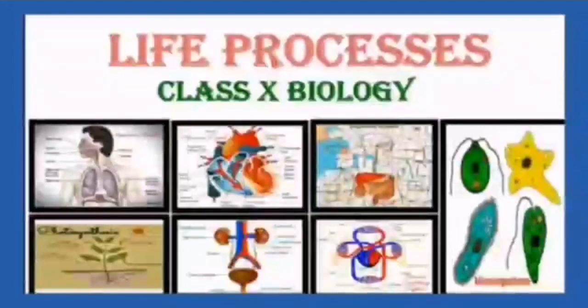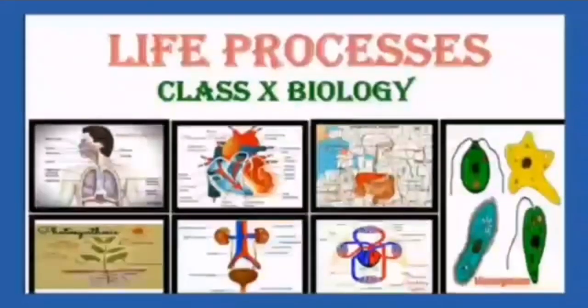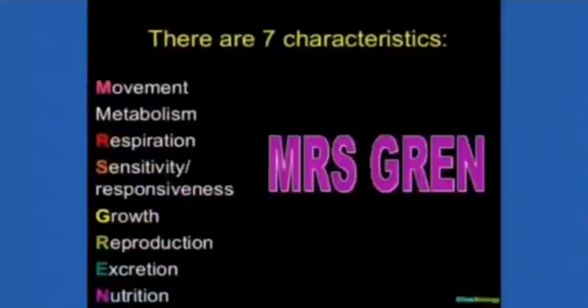Though it is very difficult to define life and living beings, we can see that life is cell-based, self-regulated complex system of molecules where chemical reactions are going on all the time. Now what are the different characteristics of living things or what are the various characteristics of life?